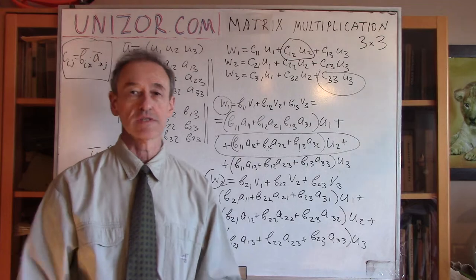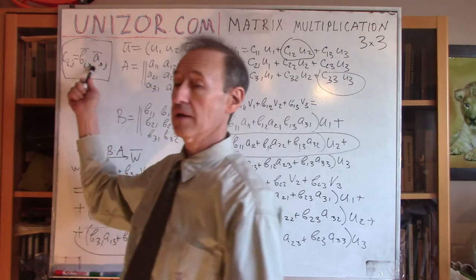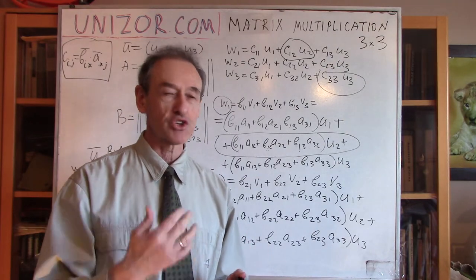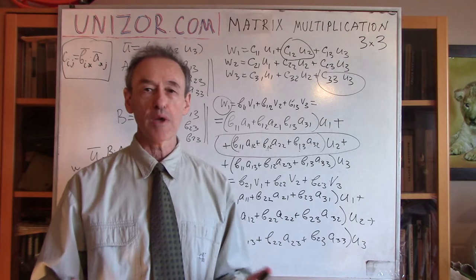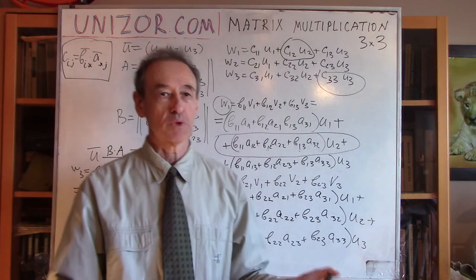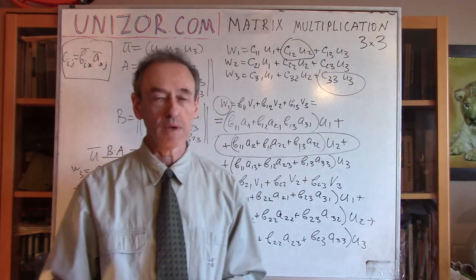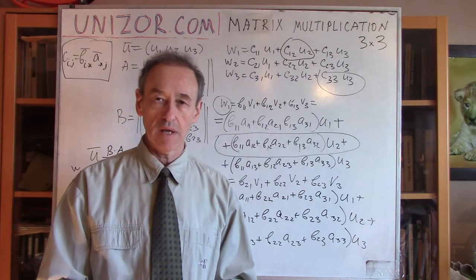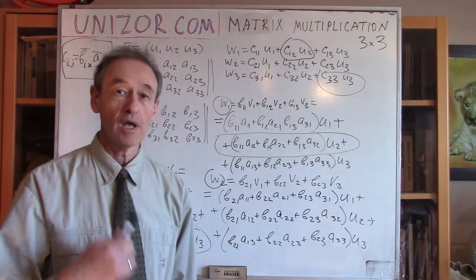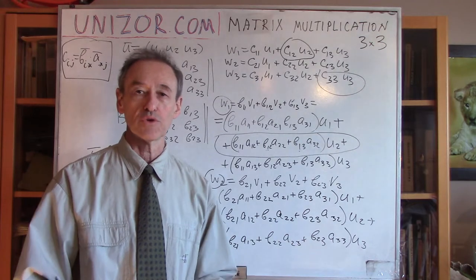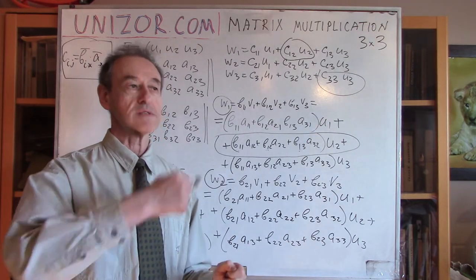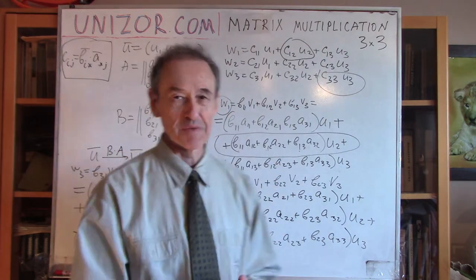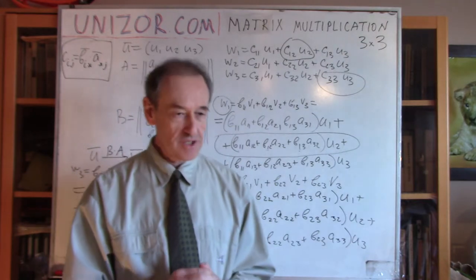Why did I go through all these calculations again instead of just stating the definition of matrix multiplication? It seems to me that when you verify with your own hands that this is the right way to do it, you don't have any questions about why. If I just tell you this is the definition, the reasonable question is why. Here, I derived this formula by actually doing the calculations — applying one transformation and then another — and that's the result. There's nothing you can do about it, because this is exactly what happens when you transform once with matrix A and then with matrix B.